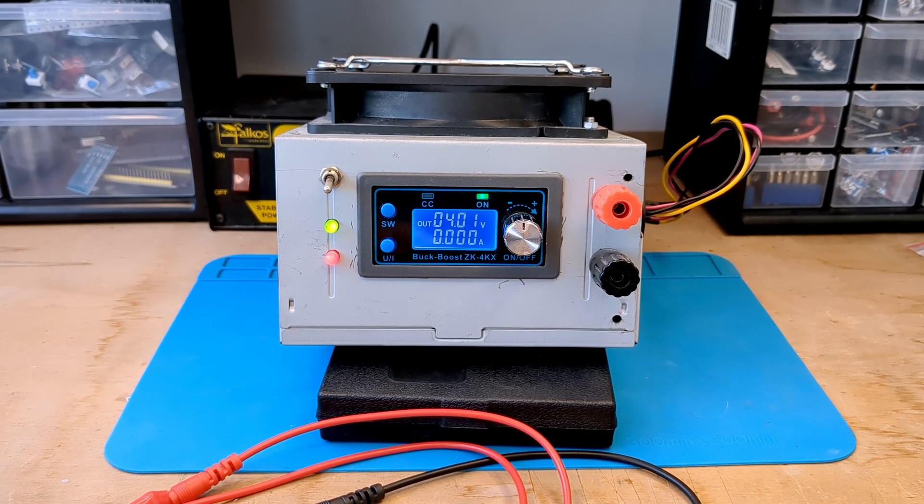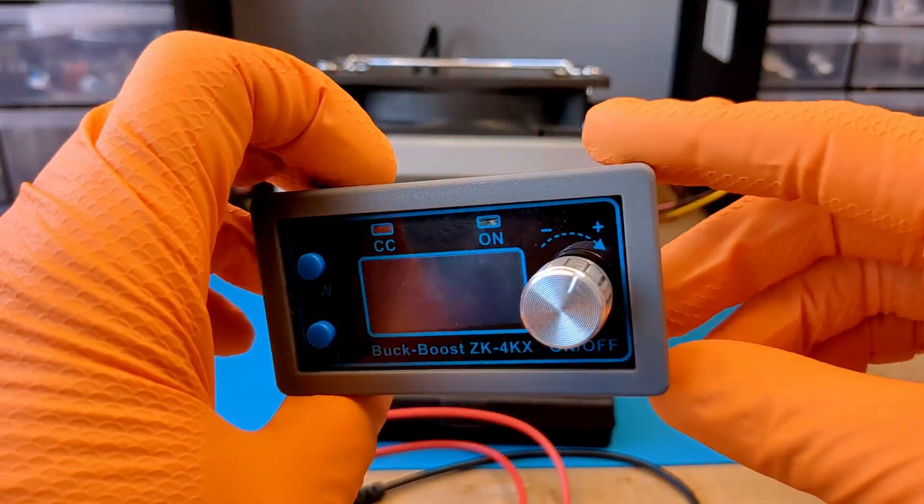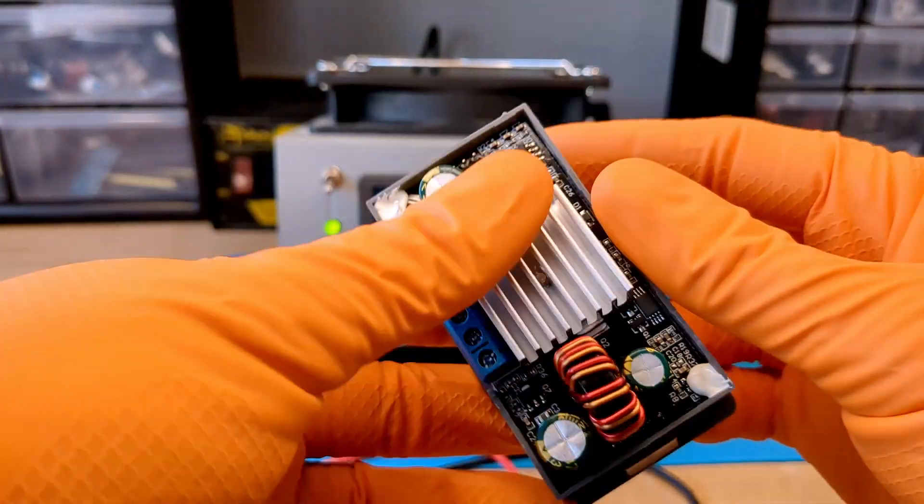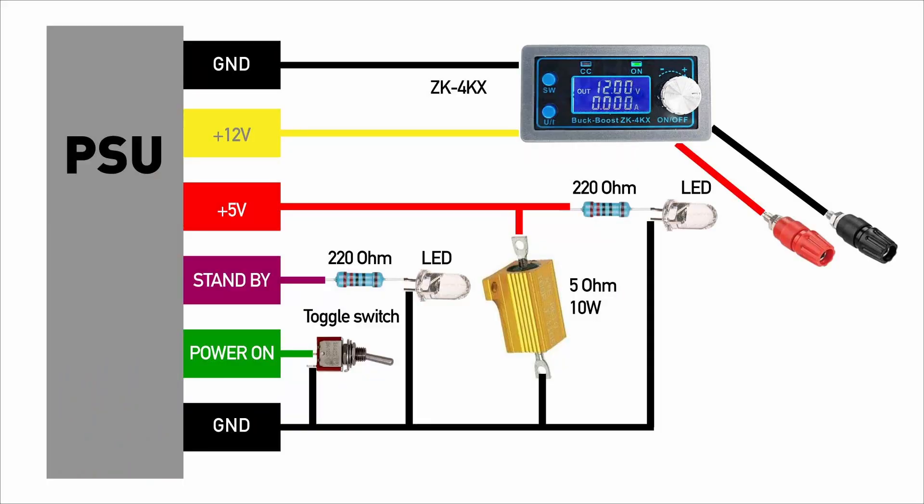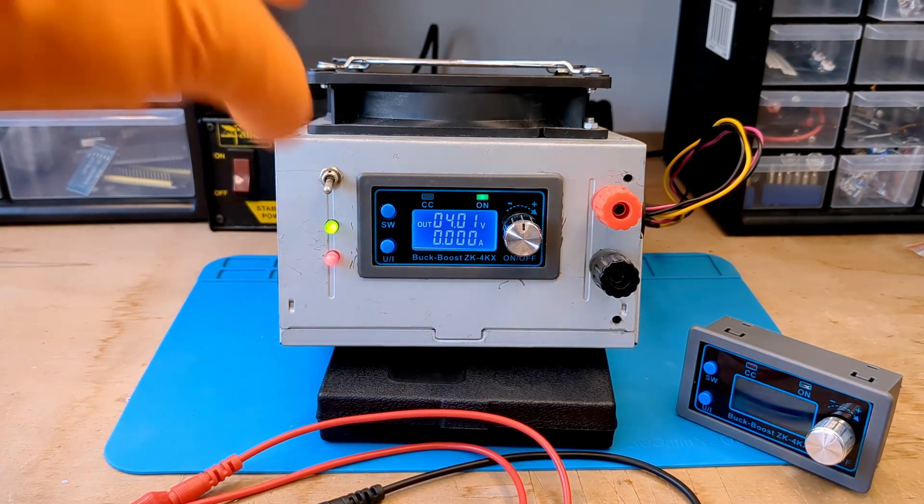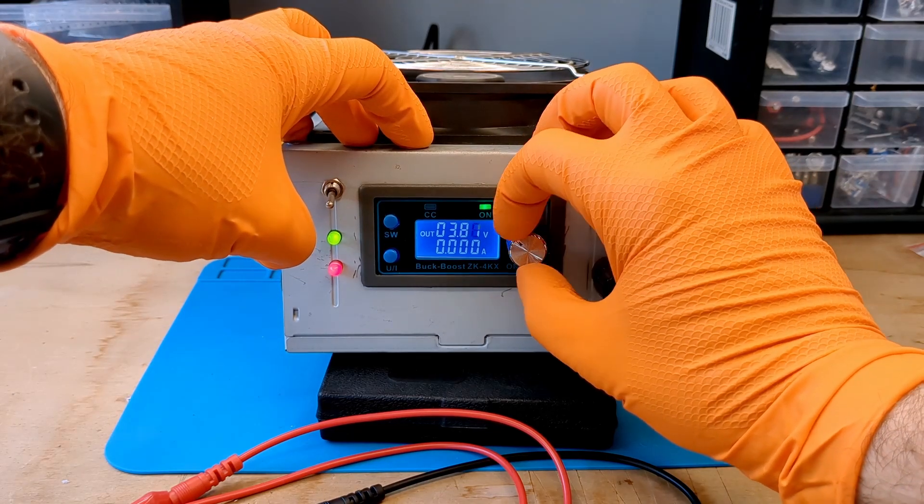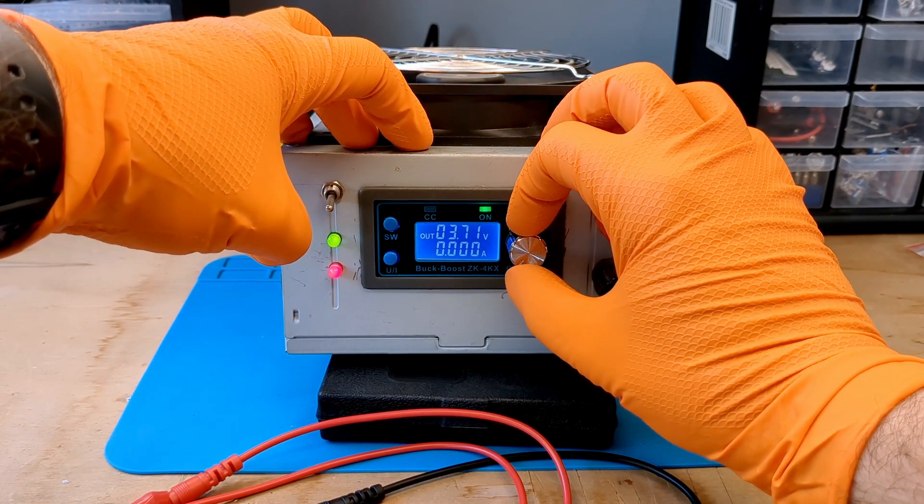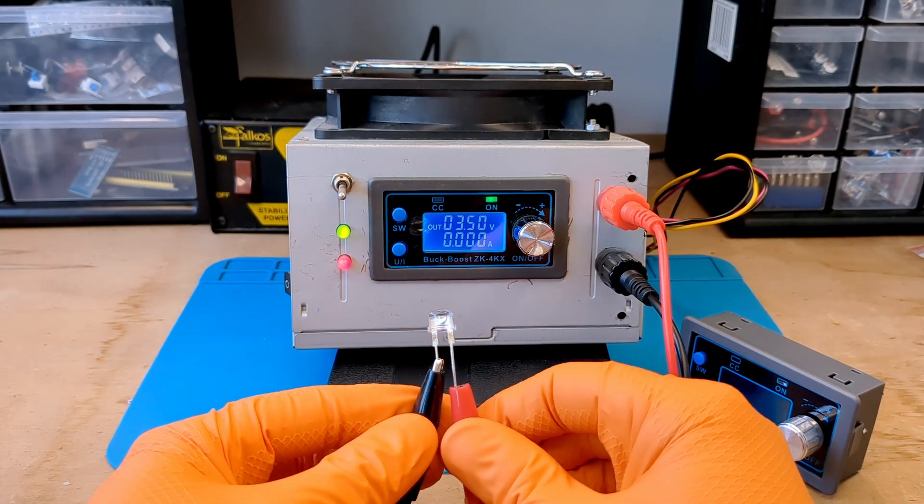I frequently use a bench power supply that I made by combining an old computer power supply with the ZK4KX module. This module is a buck-boost converter with a display. I used this wiring diagram. In the video description, you will find a link to the schematic and all the components used to make it. The ZK4KX module is very affordable and meets all my needs. You can adjust both voltage and maximum current using the two buttons and potentiometer.